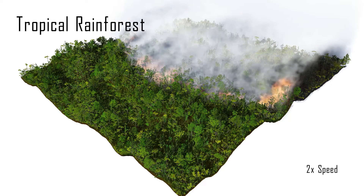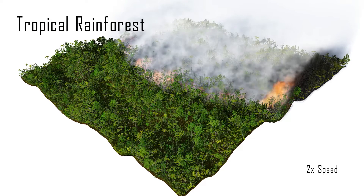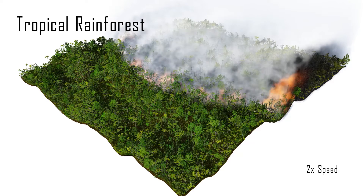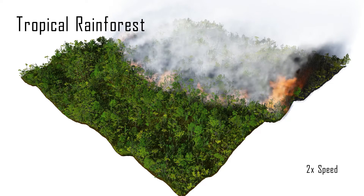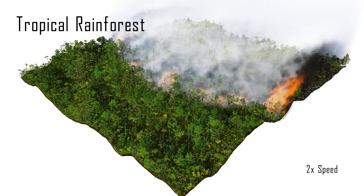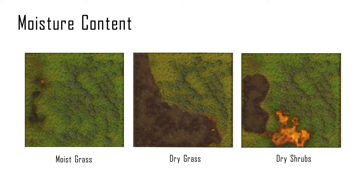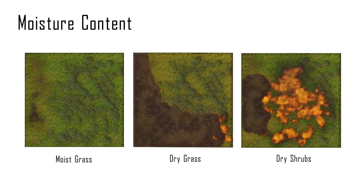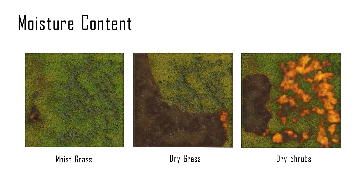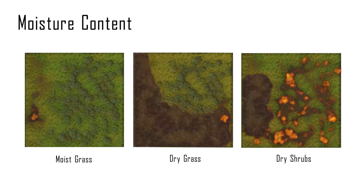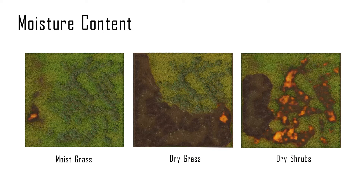Our model takes into account not only the spatial distribution of fuel, but also its disposition to combust, referred to as fuel moisture. Wildfire progression and behavior is largely dependent on the distribution of fuel moisture. Here we show three different progressions of wildfires in a shrubland scene caused by varied fuel moisture distribution.